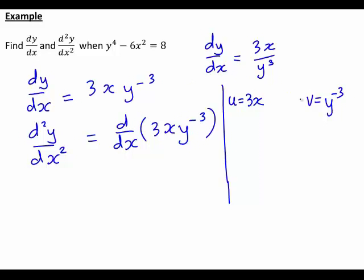Let v be equal to y to the negative 3. Although with the product rule, it doesn't really matter which one is u and which one is v. Then du dx is 3.